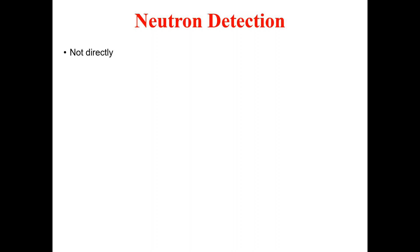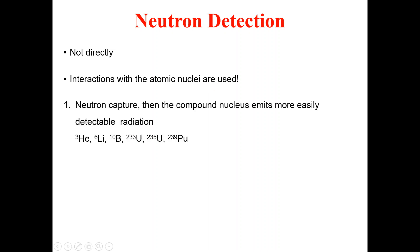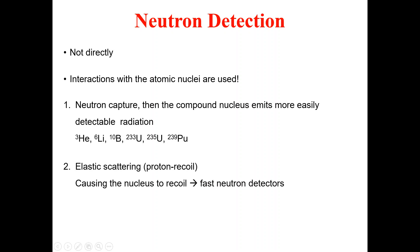In summary, neutrons cannot be detected directly, so interactions with atomic nuclei are used. In neutron capture, the compound nucleus emits more easily detectable radiations. Materials used include helium-3, lithium-6, boron-10, uranium-233, uranium-235, and plutonium-239. We can also use elastic scattering — that is, proton recoil — where the nucleus recoils, which is particularly useful for fast neutron detectors.